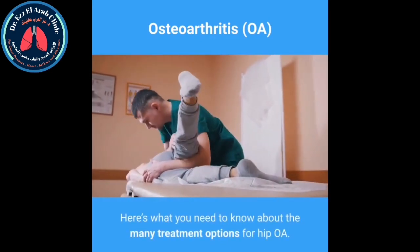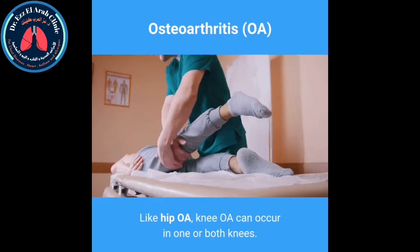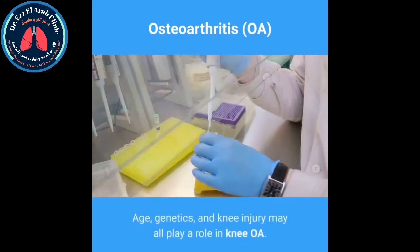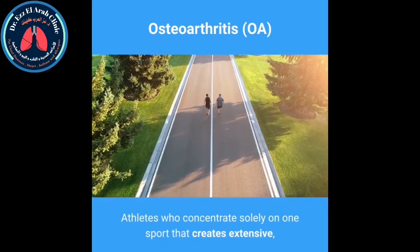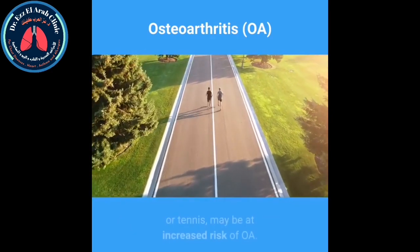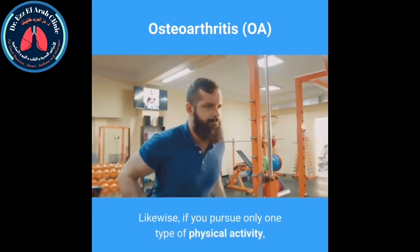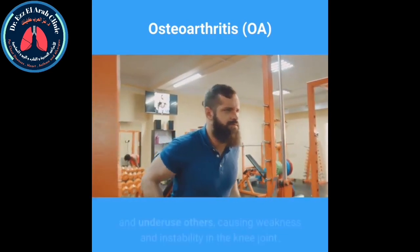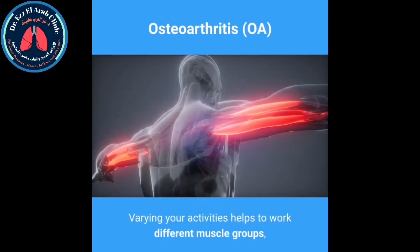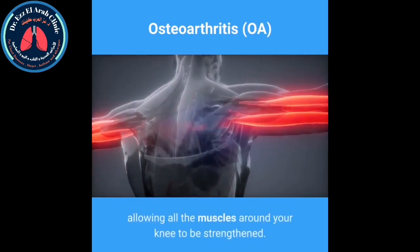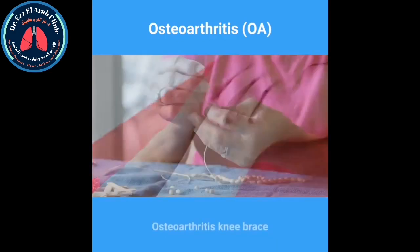Osteoarthritis in your knees. Like hip OA, knee OA can occur in one or both knees. Age, genetics, and knee injury may all play a role. Athletes who concentrate on one sport with extensive repetitive motion — such as running or tennis — may be at increased risk. Pursuing only one type of physical activity may overuse some muscles and underuse others, causing weakness and instability in the knee joint. Varying your activities helps strengthen all the muscles around your knee. Treatment for knee OA depends on the stage of the condition.